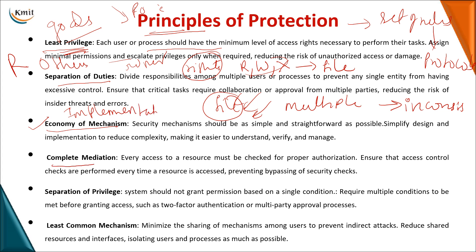The next principle is complete mediation. Before a particular file is accessed by a user, you check whether that user is allowed to use that file or not. We have various mechanisms for this, which will be covered in the next topics. Only if the check passes is file access granted to the user.